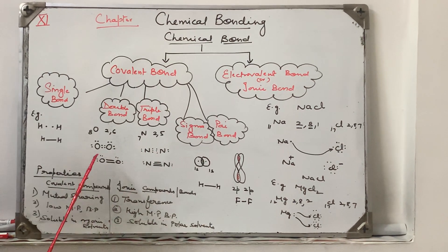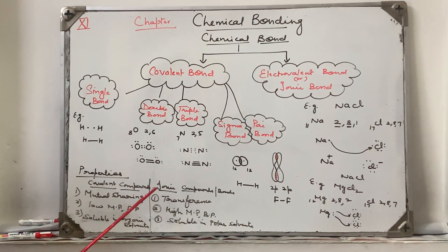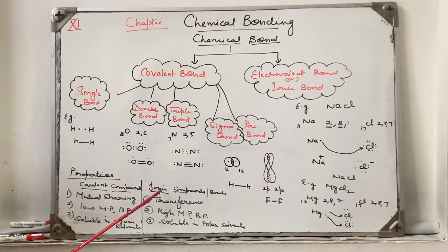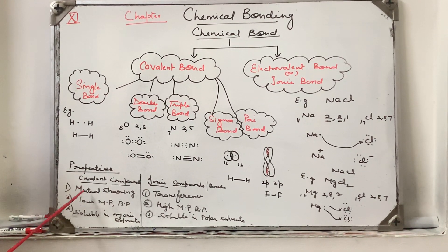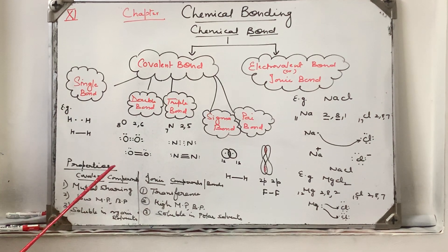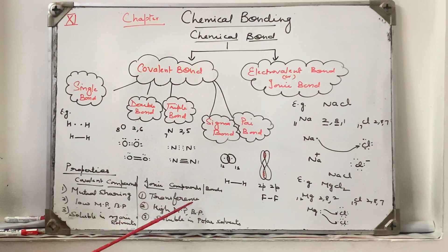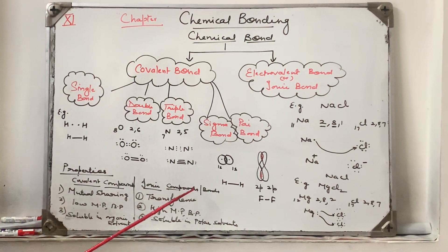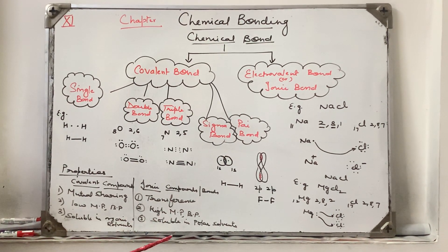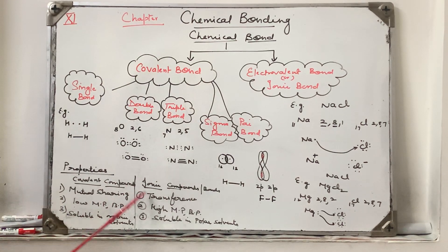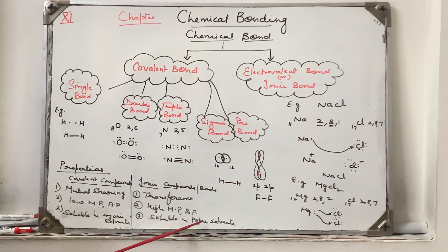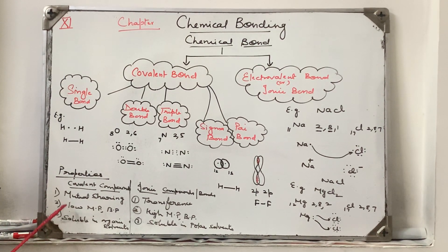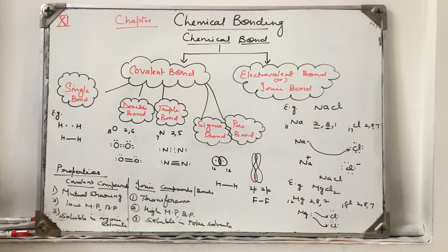Now we will discuss a little about the properties of these compounds or bonds. Covalent is formed by mutual sharing; ionic is formed by transfer of electrons. Covalent compounds have low melting point and boiling point. Ionic compounds are polar, that's why they have high melting point and boiling point. You know like dissolves like, that's why these polar compounds are soluble in polar solvents like water, and non-polar covalent compounds are soluble in organic solvents.